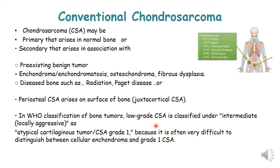In the WHO classification, low-grade chondrosarcoma is classified as intermediate, meaning it is locally aggressive. You can report a case as 'atypical cartilaginous tumor / chondrosarcoma grade 1' if you are not quite sure, because both categories are very difficult to differentiate and have the same type of treatment — both are treated by extensive curettage. So if unsure, denote it as atypical cartilaginous tumor / chondrosarcoma grade 1.